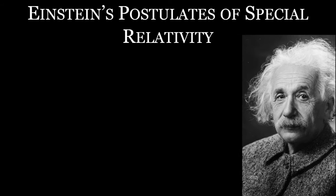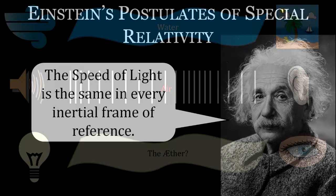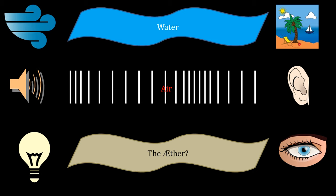Now, the second postulate is a bit more interesting. The speed of light is the same in every inertial frame. In the late 1800s, it was thought that light waves travelled through something called the luminiferous ether, just like water waves need water to move through.